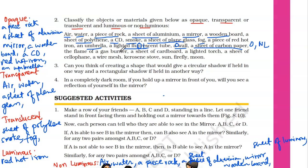The flame of a gas burner — how will we consider it? Opaque. A sheet of cardboard is also opaque. A lighted torch is producing its own light, so it has to be luminous, and the torch is obviously opaque in nature.